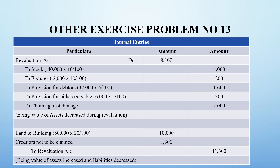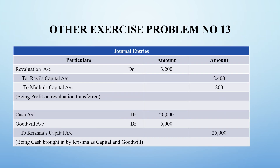For the journal entries, on the debit side the revaluation account total is Rs. 8,100. On the credit side, the balance is Rs. 11,300. The revaluation profit is transferred to the capital accounts. Ravi's capital and Muthu's capital are credited and the revaluation account is debited.